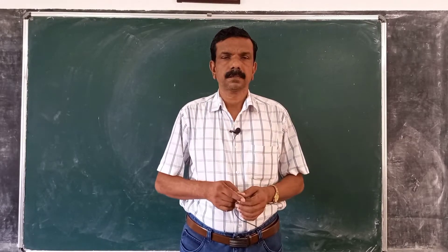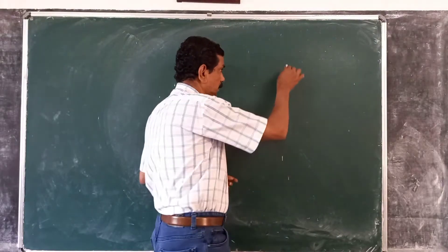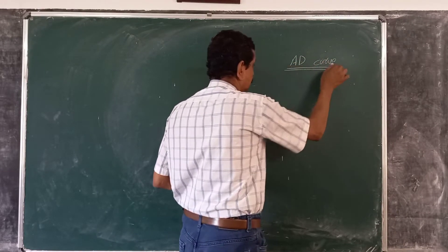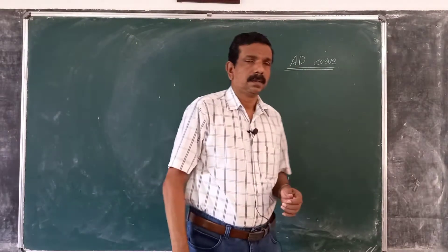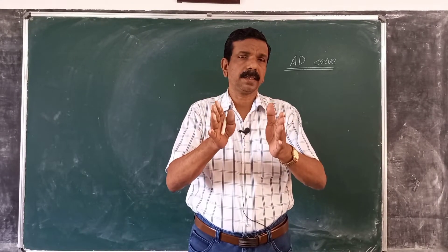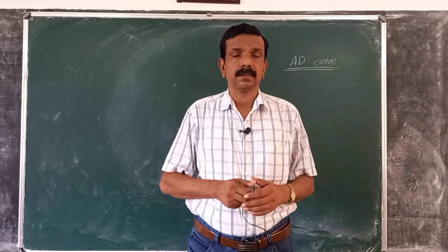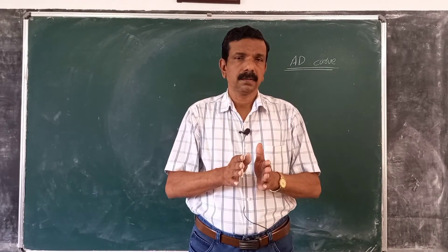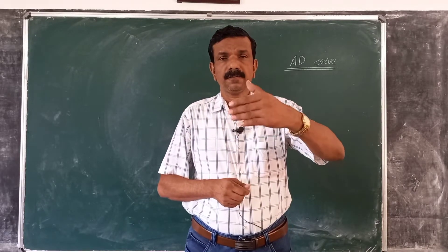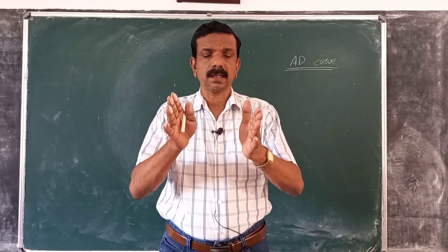Dear students, in this session we will derive the Classical Aggregate Demand curve. As we have discussed in the context of the classical theory of Employment and Output Determination, we have derived a Classical Aggregate Supply curve as vertical — that is, fixed at full employment level. Now we introduce the Classical Aggregate Demand curve.